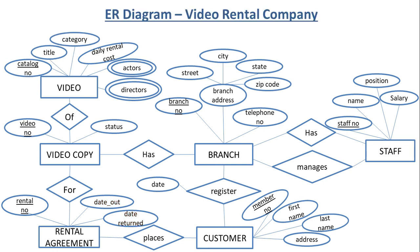Now let us map the cardinality. Video has many copies, but a copy is associated with only one video. A branch has several copies of video, but a copy is associated with only one branch. A branch has many staff, but one staff member works for only one branch.